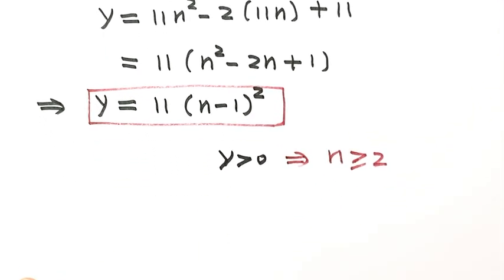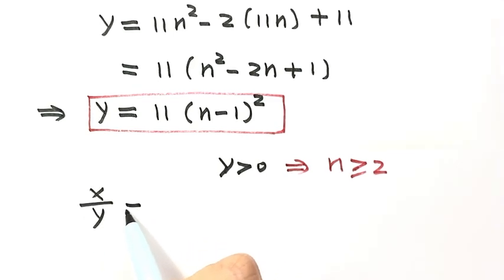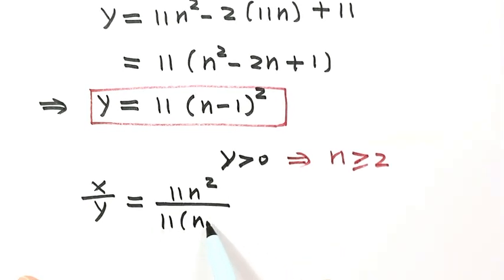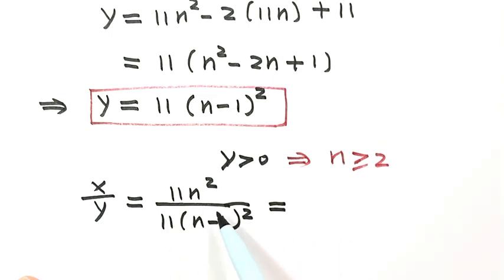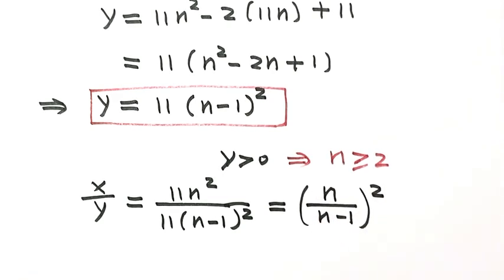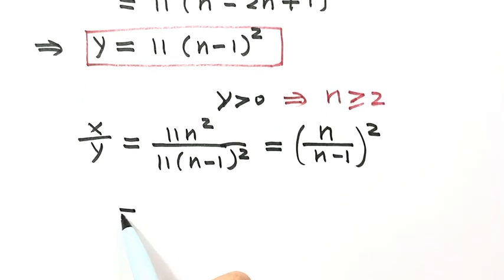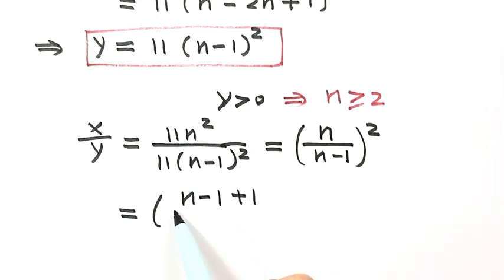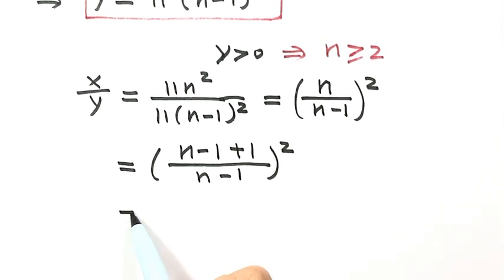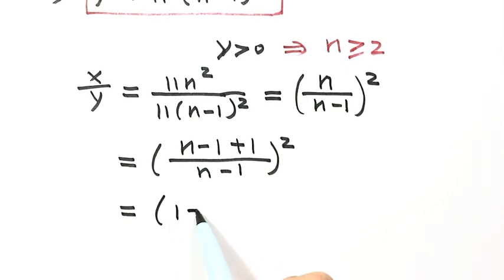Now let's find x over y. With x = 11n² and y = 11(n minus 1)², the common factor 11 cancels, giving x over y equals n squared over (n minus 1) squared. Rewriting the numerator as (n minus 1 plus 1), we can separate this into (1 plus 1 over (n minus 1)) squared.